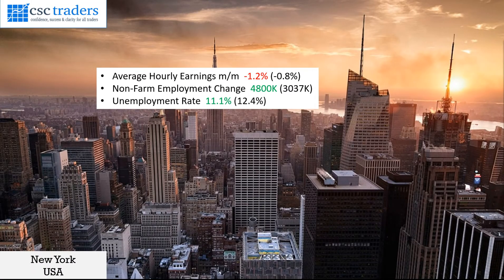Looking at yesterday's markets, the main event was non-farm payrolls. We saw the average hourly earnings drop by negative 1.2%. The economy did, however, add 4.8 million new jobs in June, meaning that a lot of the COVID lockdown people are returning to work. Unemployment rate also dropped to 11.1%, so that was positive news for the US dollar. Overall, there wasn't really much movement on the US dollar, particularly if we look at the EURUSD. The range for the day was only around about 50 to 60 odd pips and the EURUSD is currently trading at 1.1240. That was the major event — it proved to be not much of an event given the current circumstances.